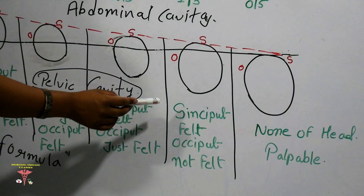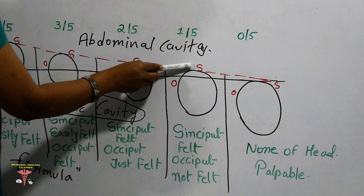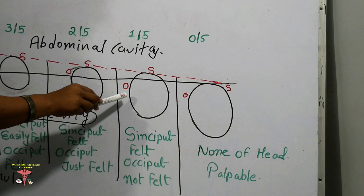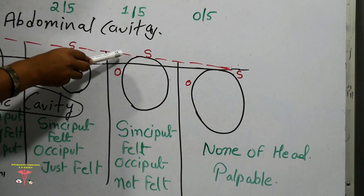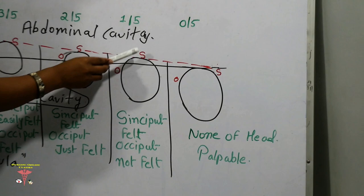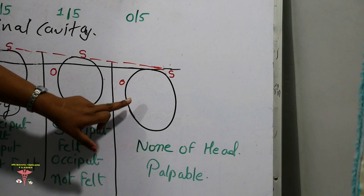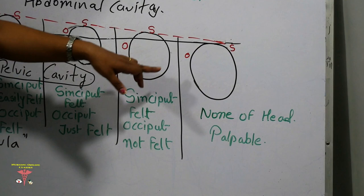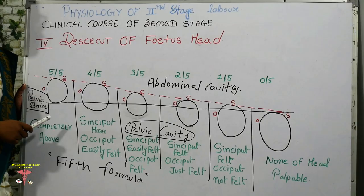At 1/5, the sinciput can now only just be felt while the occiput has crossed below the pelvic brim, so the occiput cannot be felt abdominally. At 0/5, no part of the head is palpable abdominally, because the occiput has completely crossed the pelvic brim. This completes the fifths formula used to assess the descent of the fetal head.